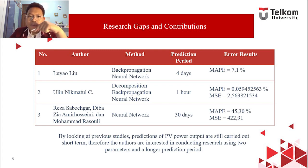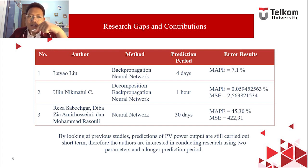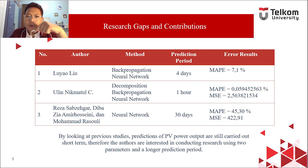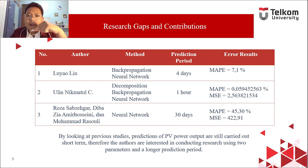These are the previous research that have been done in this field. By looking at these studies, most predictions of PV power output are still carried out short term. Therefore, the authors are interested in conducting research using two parameters and a longer prediction period. However, the one with a longer prediction period tends to be less reliable. Therefore, we settled on using medium-term prediction instead to provide a balance between accuracy and period.